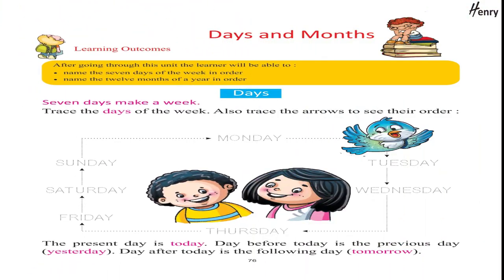Days and months. Learning outcomes: after going through this unit, the learner will be able to name the seven days of the week in order and name the twelve months of a year in order. Days: seven days make a week. Trace the days of the week and trace the arrows to see their order: Monday, Tuesday, Wednesday, Thursday, Friday, Saturday, Sunday. The present day is today; the day before today is yesterday; the day after today is tomorrow.